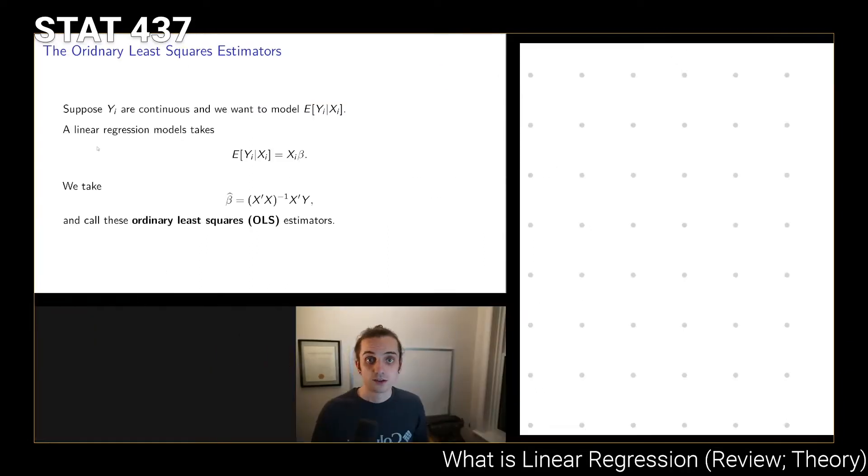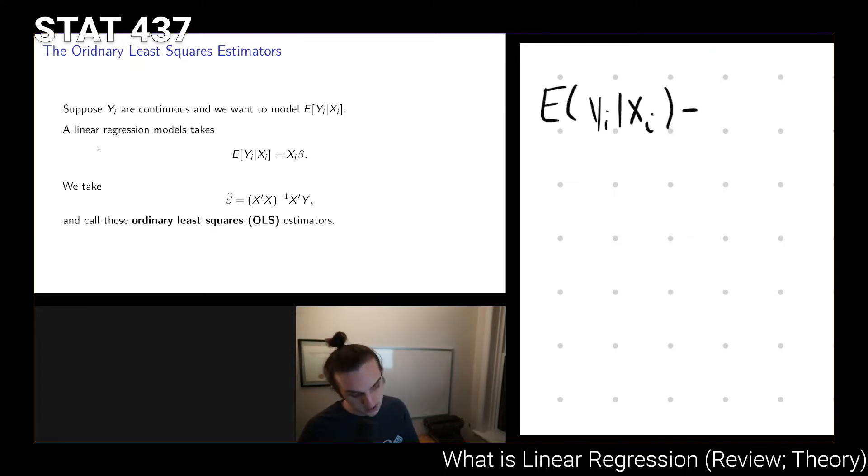I'll wander over to the whiteboard and clarify something on notation. We're saying that the expected value of Yi given Xi is equal to Xi times beta. Now, oftentimes we're actually going to write this out more explicitly. Here, Xi is going to be a vector as is beta.